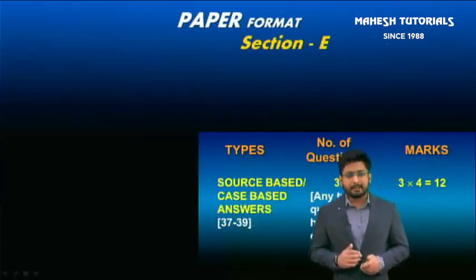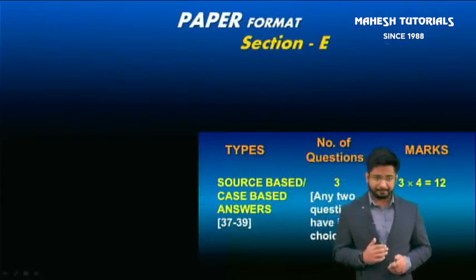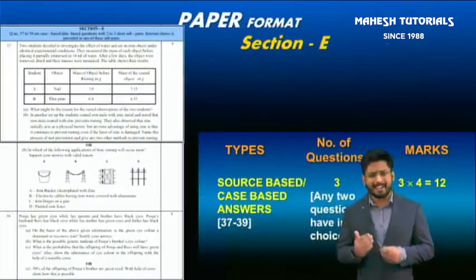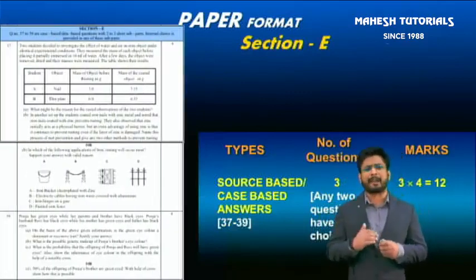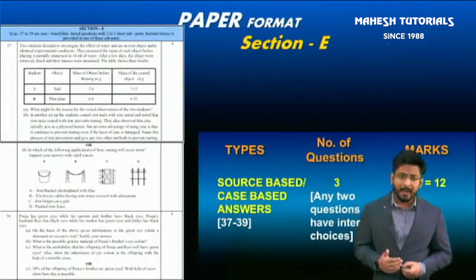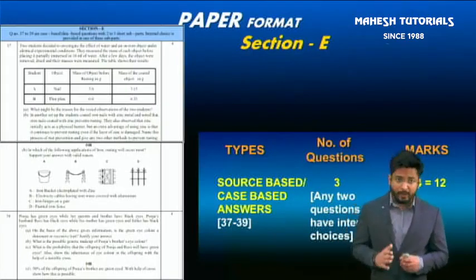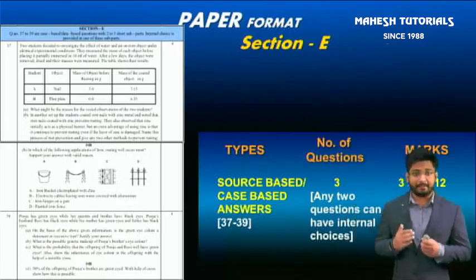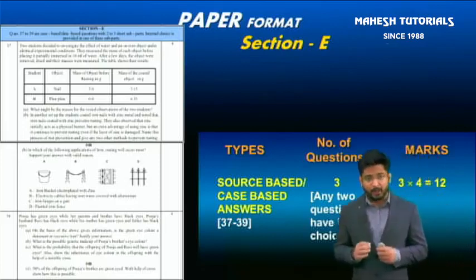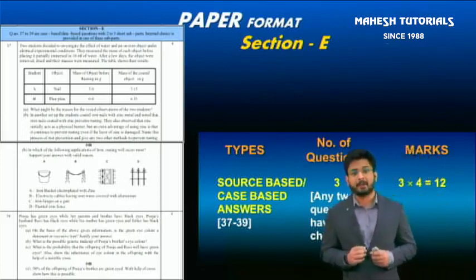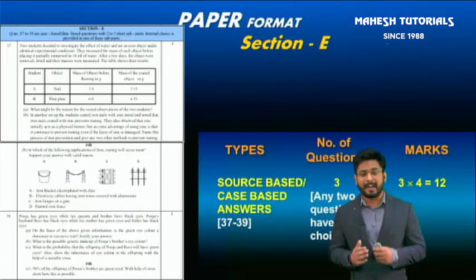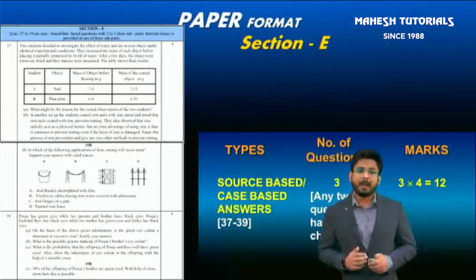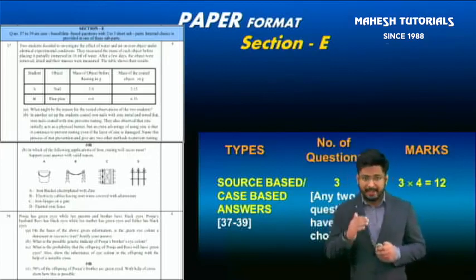Section E contains source-based, case study-based, or paragraph-based questions. There are three such questions and any two can have internal choices. Each question carries a weightage of four marks, making up a total of 12 marks. That covers the entire paper format.